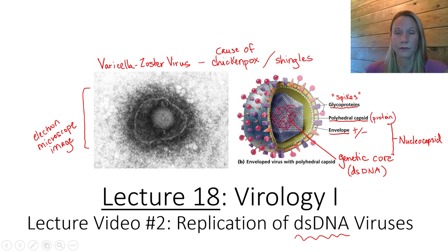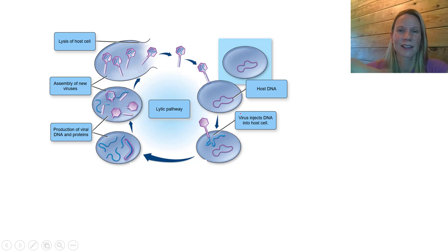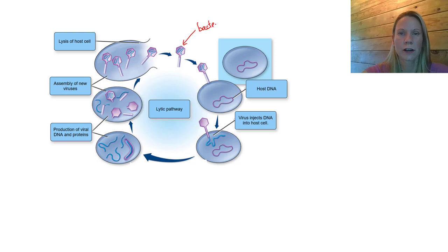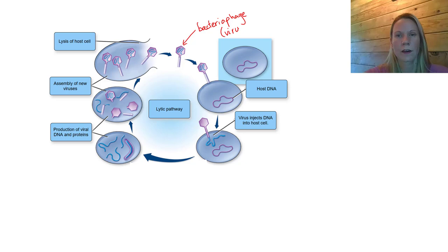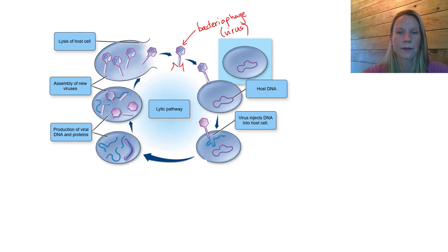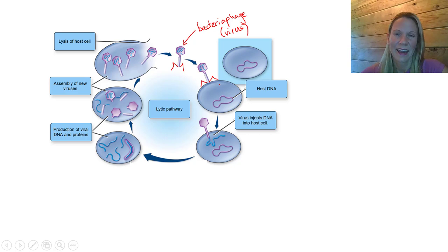In the last video we learned that bacteriophage is a virus that can infect bacterial cells. This is a picture of bacteriophage — remember this is an example of a complex virus, and it actually has those little tail fibers not pictured in this diagram. We learned that there are two different life cycle strategies of bacteriophage, and one life cycle strategy is called the lytic pathway, or sometimes called the lytic cycle, shown in the diagram.